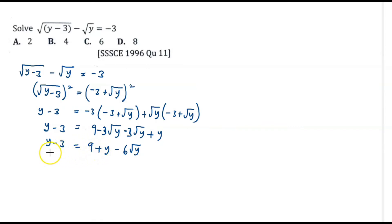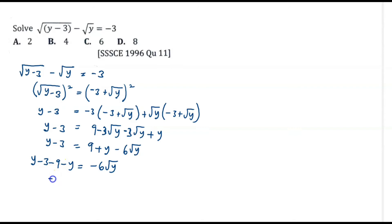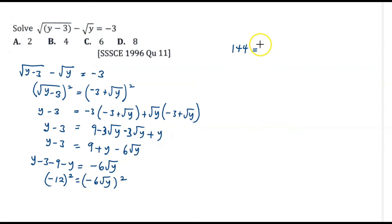We still have a surd to eliminate, so we regroup and maintain the negative 6 root y on its own. We'll have y minus 3 minus 9 minus y equal to negative 6 root y. Simplifying the left hand side: y minus y is 0, and negative 3 minus 9 gives negative 12, so negative 12 equals negative 6 root y. Squaring both sides to get rid of the radical sign: negative 12 squared gives 144, and negative 6 squared gives 36, so 144 equals 36y.